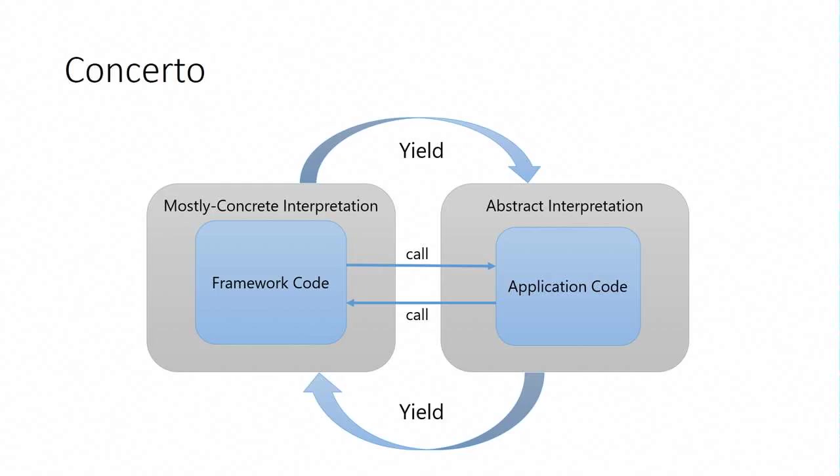So here's the idea: to hope that you could take the framework code and basically just run it. Now, it's going to be mostly concrete, and I'll explain that mostly a little bit in a few minutes. But then, when the framework code calls the application code, we'd like to yield to an abstract interpreter that wouldn't execute the application code. It would determine a sound fixed point of the behavior in traditional abstract interpretation fashion. And then, when the application code called the framework code, it would yield back to a concrete interpreter. And this is one of those things that looks beautiful in PowerPoint, and then there's a ton of work to make it actually make sense and be sound and all that sort of stuff.